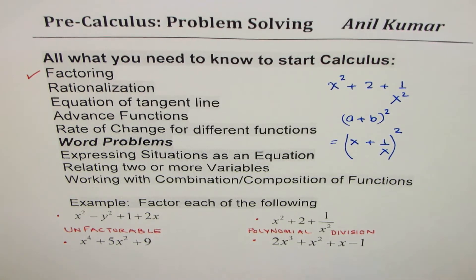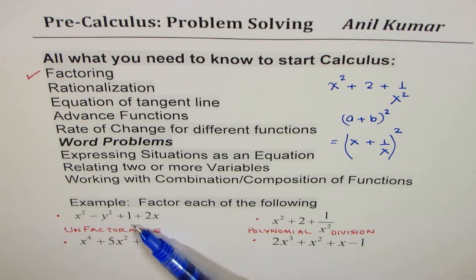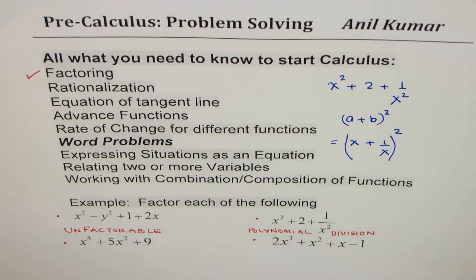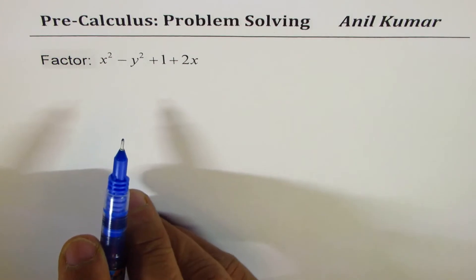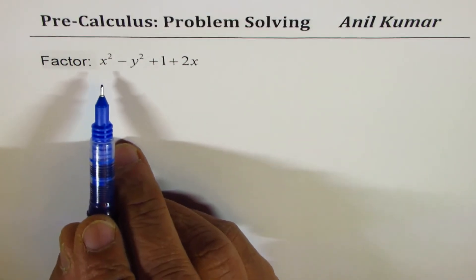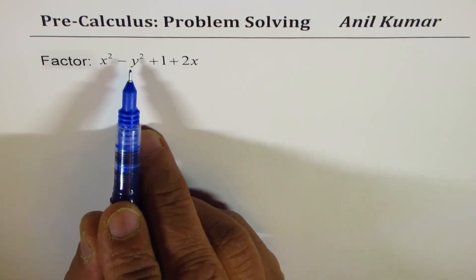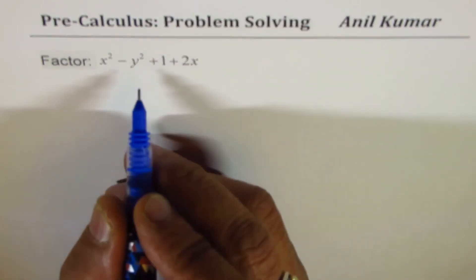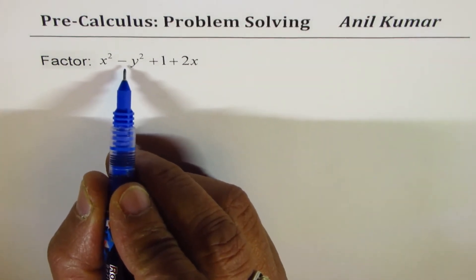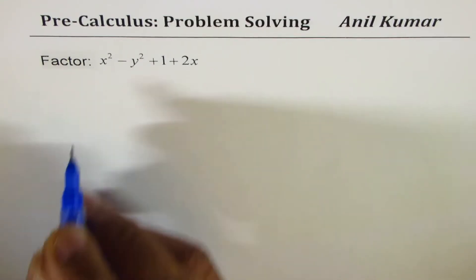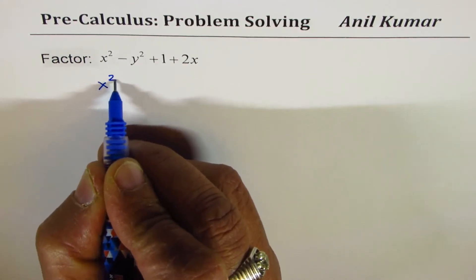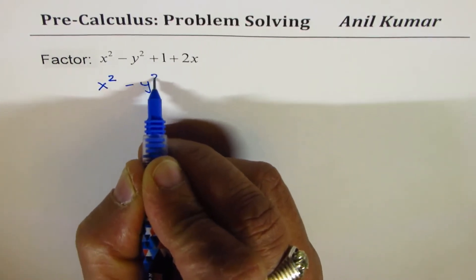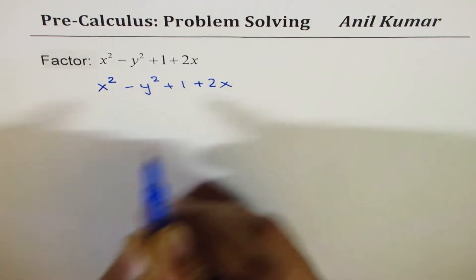Now we have done the trinomial using the formula and now we'll do this one in the next part. So I just copied these questions. You can actually solve them and then look into my solution. So let's see how to factor x² - y² + 1 + 2x.